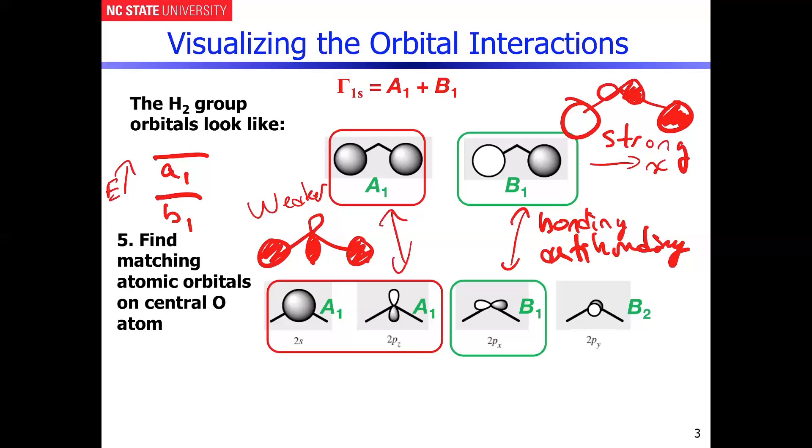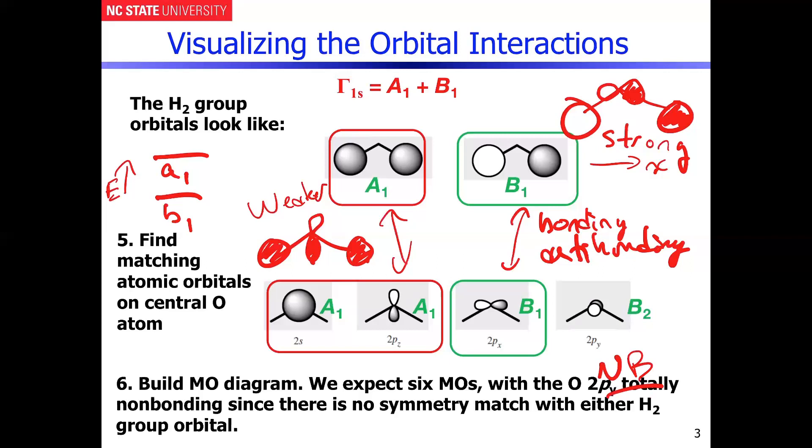Finally, the B2 combination obviously in this particular case is non-bonding because there's no symmetry match to anything that is constructed from the H2 group orbital.